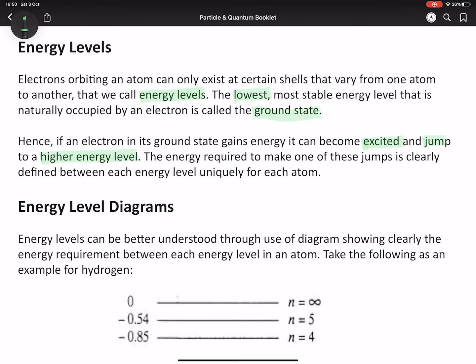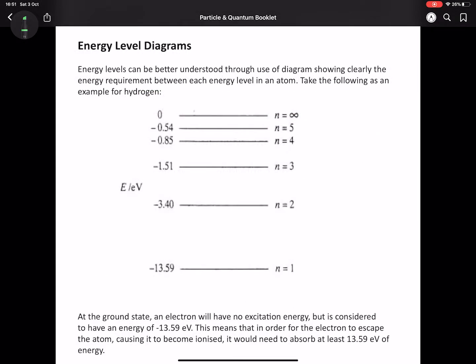When we look at energy levels, we usually use an energy level diagram. These diagrams may look confusing at first, but they're actually quite straightforward when you realize what the negative values mean. The bottom level is the ground state, where your electrons are normally going to be. We label that n equals 1. That has a negative value, minus 13.59 electron volts.